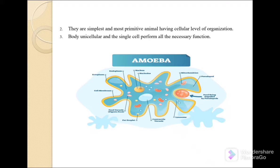If you compare with humans or other eukaryotes, they have many cells — for respiration they have a nose, for feeding they have a mouth and stomach. Many cells are present and each has its particular function. But in these organisms, only one cell performs all the necessary functions: feeding, respiration, and excretion. A good example is Amoeba — it is a single cell performing all functions, including feeding and excreting waste material.